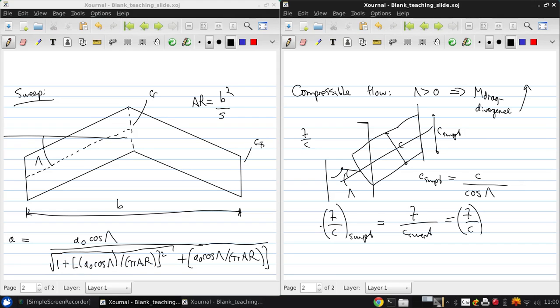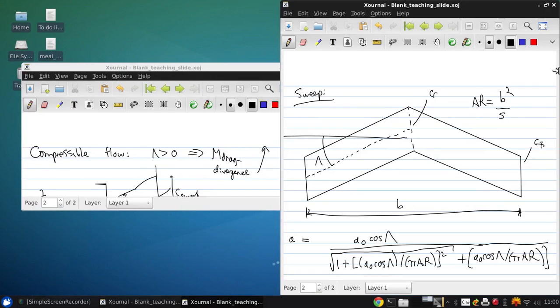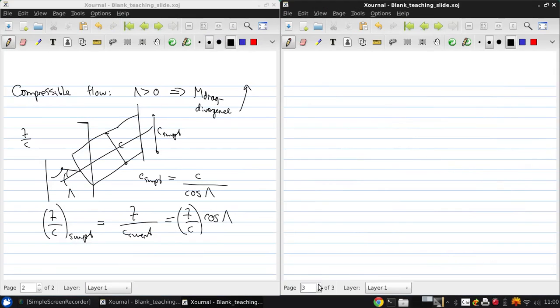You can see that the thickness to chord ratio of the swept airfoil is scaled down by cosine of lambda. And so because this effectively now makes the airfoil thinner, sweep increases the critical Mach number and thus the drag divergence Mach number. So now we can see the benefit of sweeping the wing in compressible flow.